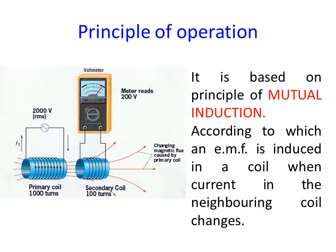According to Faraday's law, whenever the flux linking with a conductor changes, an EMF is induced in the coil. So, due to changes in the magnetic flux, EMF is generated across the secondary coil. If the secondary coil is connected to an external load, current flows through the external load and that generates the voltage across the load. This is the principle of operation of the transformer.